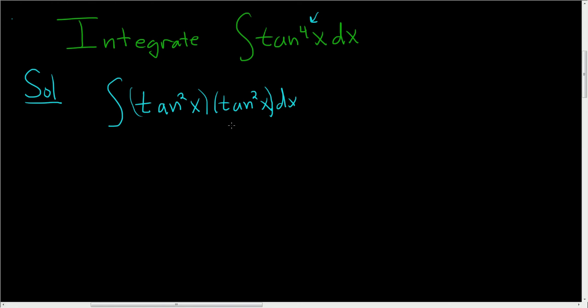All right, now we're going to use an identity. Let's use it here on this piece. So this is tangent squared x, and tan squared is secant squared x minus 1. It's an identity dx.